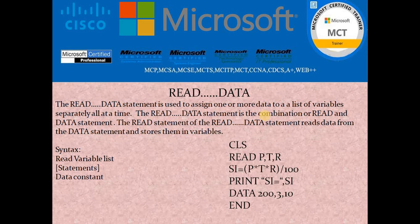As soon as you declare READ and list the variables, those variables automatically go in search of the values assigned by the DATA keyword. So when I write READ P, T, R, rather than executing line 3 directly, it will jump to the DATA statement line, read the values, come back and assign them to P, T, and R. By the time execution reaches line 3, the values 200, 3, and 10 are already assigned — so the simple interest calculation 200 * 3 * 10 / 100 will be performed and the result displayed.